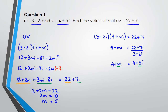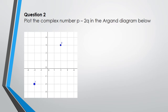On to question 2 — pause and try it first. In this question you need to plot the complex number p minus 2q on the Argand diagram. First we work out p, which is 2 plus 3i. As for q, it's at negative 2 and negative 2, so q equals negative 2 minus 2i.